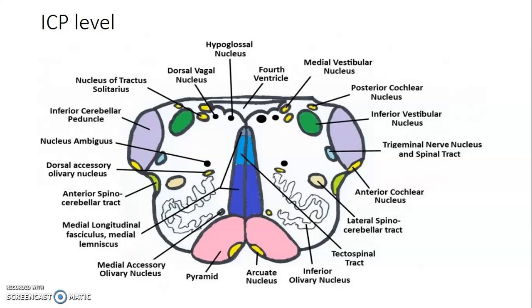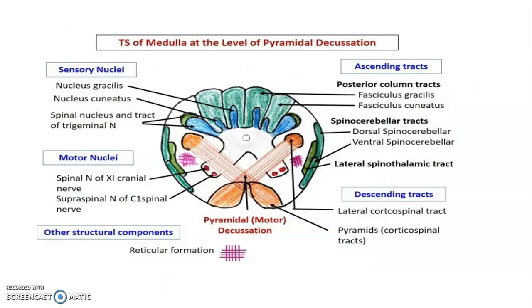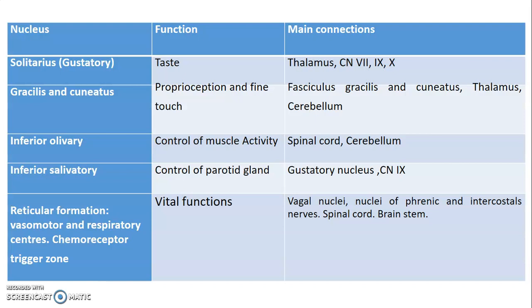The ascending tracts visible in cross-section include fasciculus gracilis, fasciculus cuneatus, dorsal and ventral spinal cerebellar tracts, and lateral spinothalamic tract. Descending tracts include lateral corticospinal and corticospinal tracts within the pyramids. Sensory nuclei include nucleus gracilis, nucleus cuneatus, and the spinal tract and nucleus of trigeminal nerve, plus additional motor nuclei.